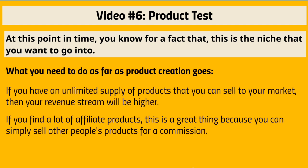There are different routes you can take. You can find affiliate products — products other people have created — and direct your blog traffic to them. If they buy, you get an affiliate commission. For example, if the vendor has a video course and gives you 50% per sale, you get half. The nice thing about this is you don't have to deal with customer support. The downside is you only get half the commission.